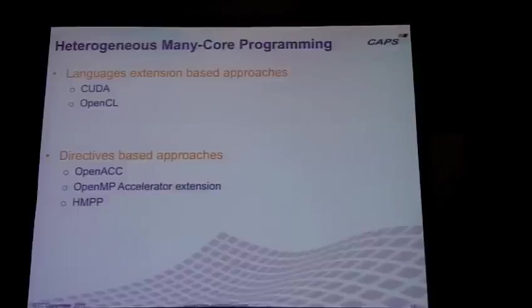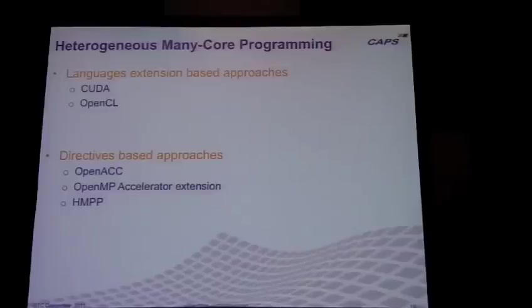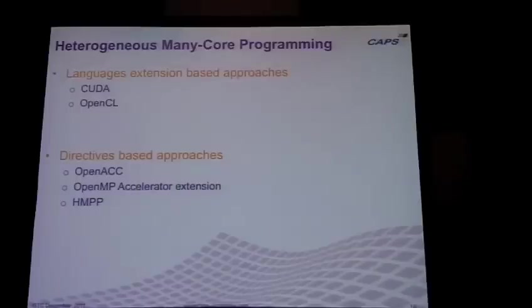There are currently different directive-based approaches. There is OpenACC, proposed by NVIDIA, PGI, Cray, and us. There is OpenMP Accelerator Extension, which is basically the same people plus some others. OpenMP Accelerators will probably integrate OpenACC. And there is HMPP, the product we do, that will support — beginning of next year — the syntax of OpenACC. One important thing is that probably by five years, there will be only one directive-based standard, because programmers, users, and vendors all want only one directive-based set.